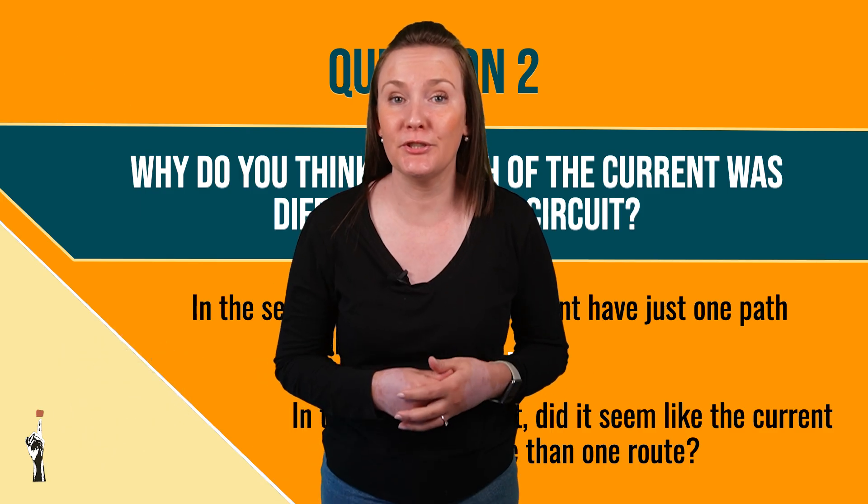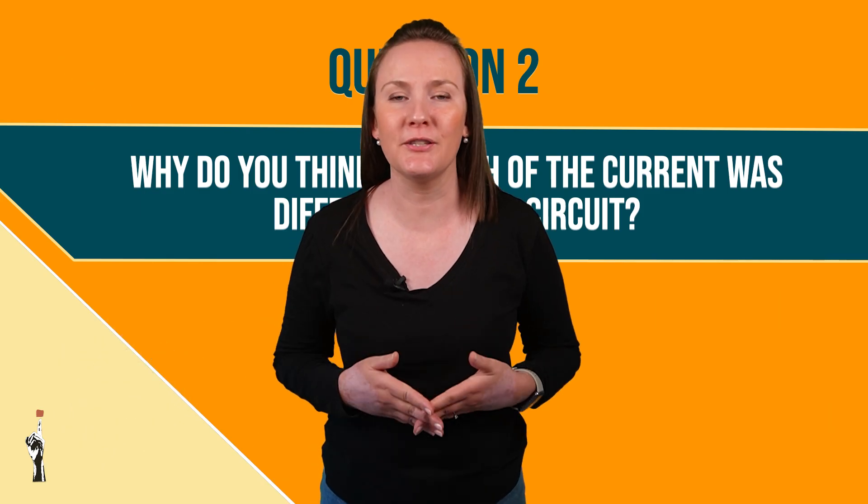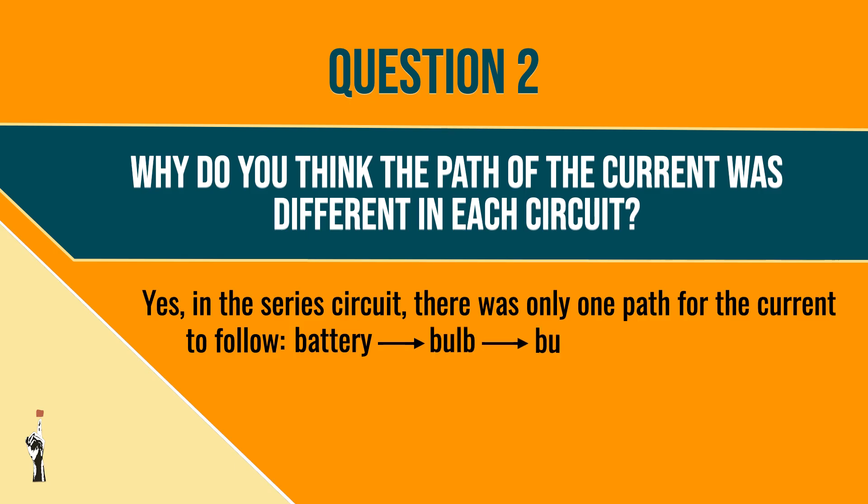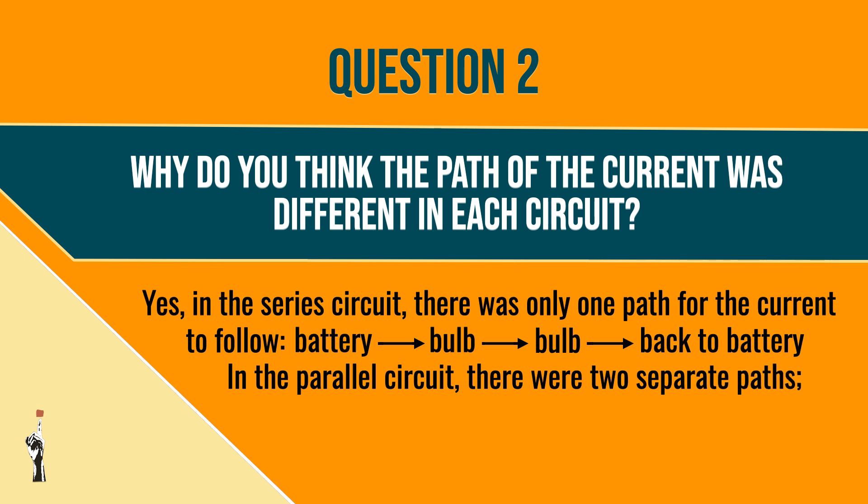So, how did you do with question two? Let's go over the answer. In the series circuit, there was only one path for the current to follow. Battery to bulb to bulb and back to the battery. In the parallel circuit, there were two separate paths, one to each bulb. The current splits between the branches.